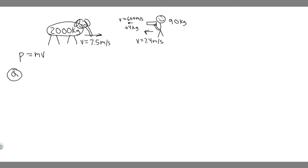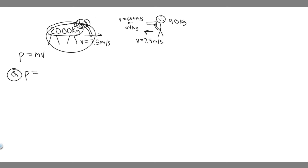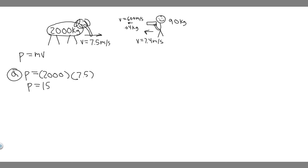Let's start with A. For A, we're trying to find the momentum of the elephant. So we're solving for momentum, which is equal to the mass of our object — in this case the elephant — which is 2,000 kg, multiplied by its velocity. We know it's running at a speed of 7.5 meters per second, so its velocity is 7.5. The momentum is equal to 2,000 times 7.5, which equals 15,000.